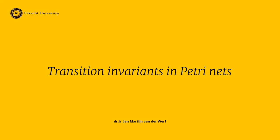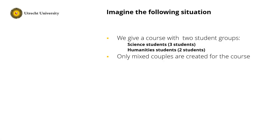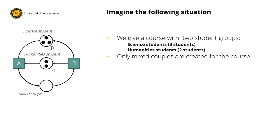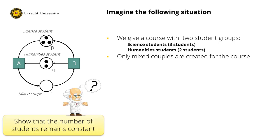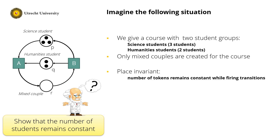In this clip I want to discuss structural properties of Petri nets, in particular for transitions. Imagine the following situation: we have a course and the course has two student groups, science students and humanities students. Suppose we have three students of the former and two of the latter. In the course we only allow for mixed couples. Modeling this results in the following Petri net, and in the previous clip we saw that we can use place invariants to show that the number of students remains constant. A place invariant is a function that assigns a weight to each place, and the number of tokens in each marking remains constant under this function. In this clip I want to dive into the question whether a similar property exists for transitions.